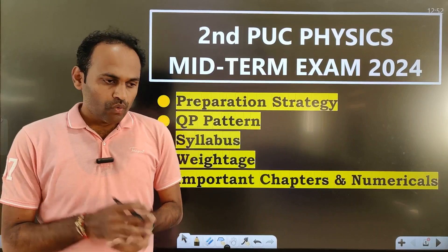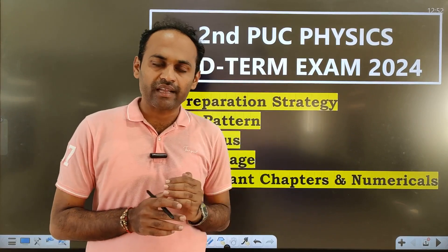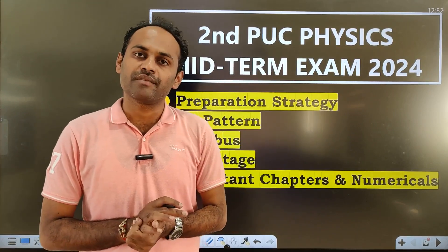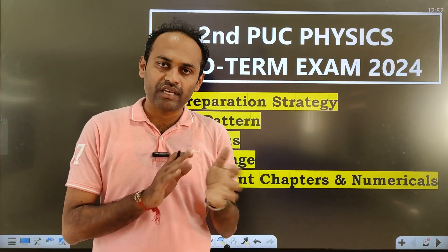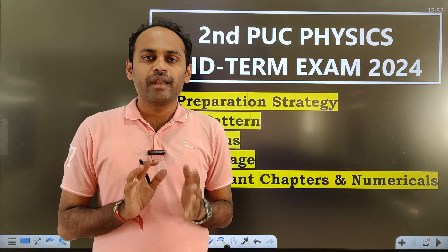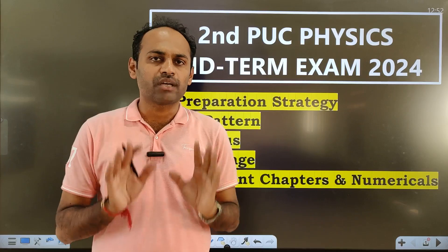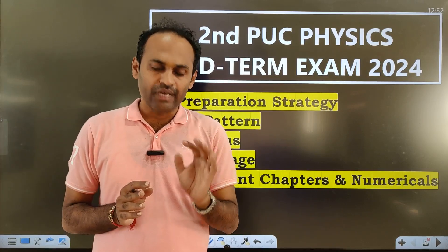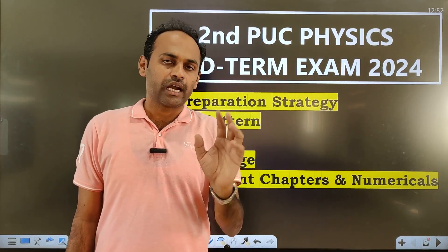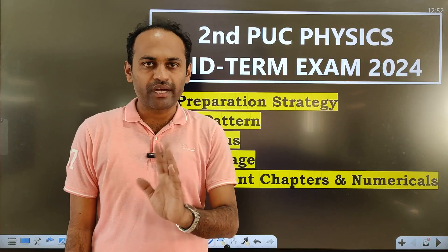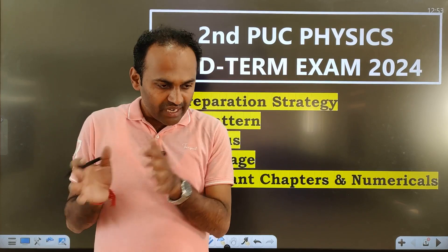Especially in physics, the toughest content we have is in part 1 only — chapters 1 to 8. The second half — ray optics, dual nature, atoms, nuclei, and semiconductors — these are the easiest chapters. They are theoretical, small, and easy. The midterm exam syllabus is not tough, but it is a little bit lengthy.